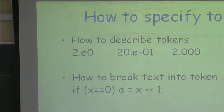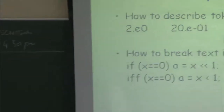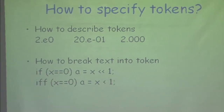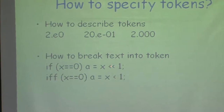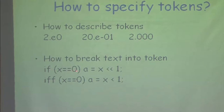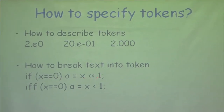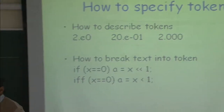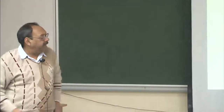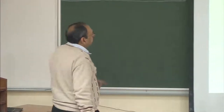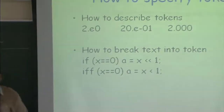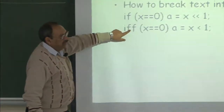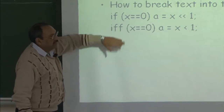Here is yet another example. I will use many examples to describe what we are trying to develop. What is the difference between the two? If I look at this, it is saying: if x is equal to 0, then a is assigned x, and then because of operator priority, I want to first do a left shift on x and assign it; here we are just saying this is Boolean. But here there is an additional 'if' that has come. How do I break this — is it 'if' followed by a variable, or is 'iff' itself a variable?